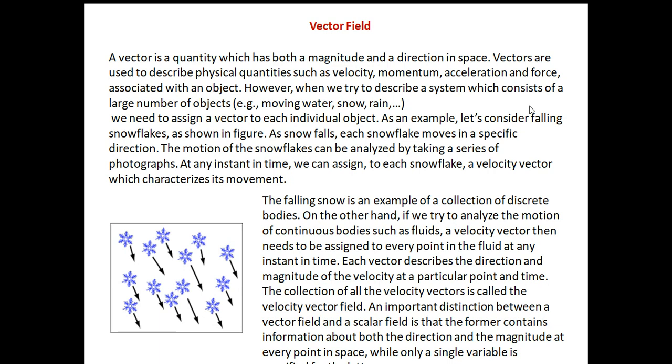The falling snow is an example of a collection of discrete bodies. On the other hand, if we try to analyze the motion of continuous bodies such as fluids, a velocity vector then needs to be assigned to each and every point in the fluid at any instant of time. Each vector describes the direction and magnitude of the velocity at a particular point and time. The collection of all velocity vectors is called velocity vector field. An important distinction between a vector field and a scalar field is that the former contains information about both direction and magnitude at every point in the space while only a single variable is specified for the latter.